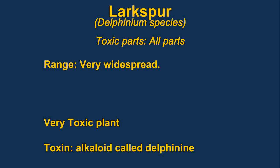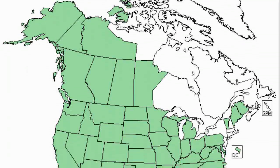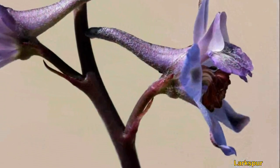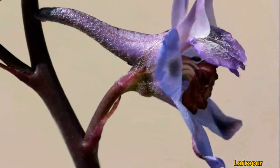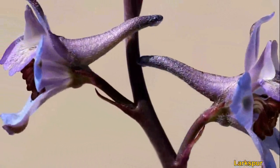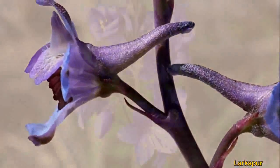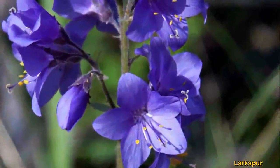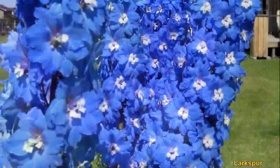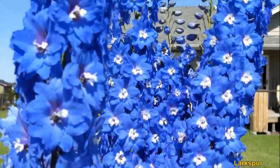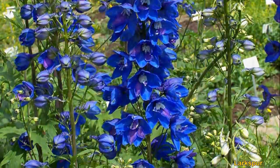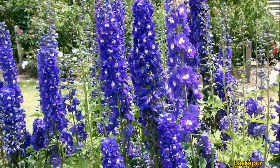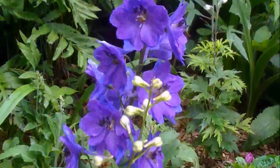Larkspur, or delphinium, is a very widespread group of plants. They are very toxic members of the buttercup family, often cultivated as garden plants because they have very beautiful flowers. It is a very significant cause of cattle poisoning — in many places, ranchers won't move their cows until later in the year when the poison is less severe.